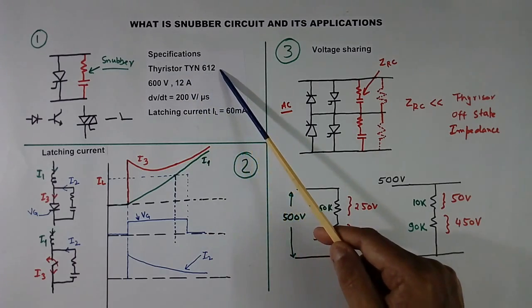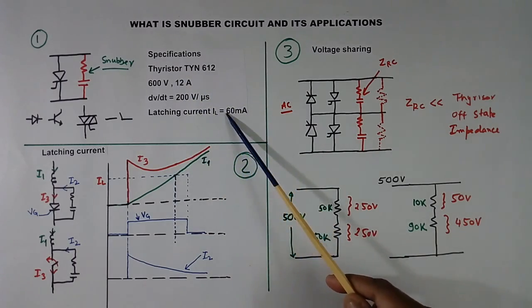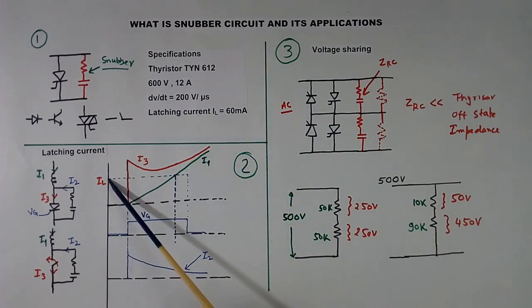For example, for thyristor TYN612, latching current is 60 mA. So this is IL, 60 mA. Thyristor current is increasing like this. It will take this much time to cross this 60 mA. So gate pulse should be longer than this. I have shown longer gate pulse. Otherwise thyristor becomes off and it will not latch.